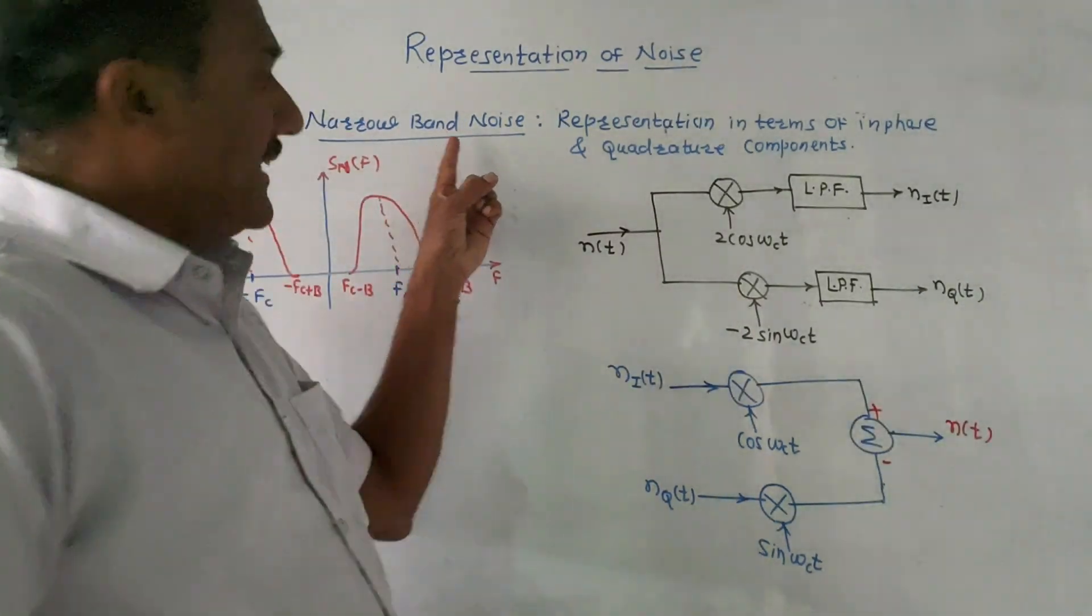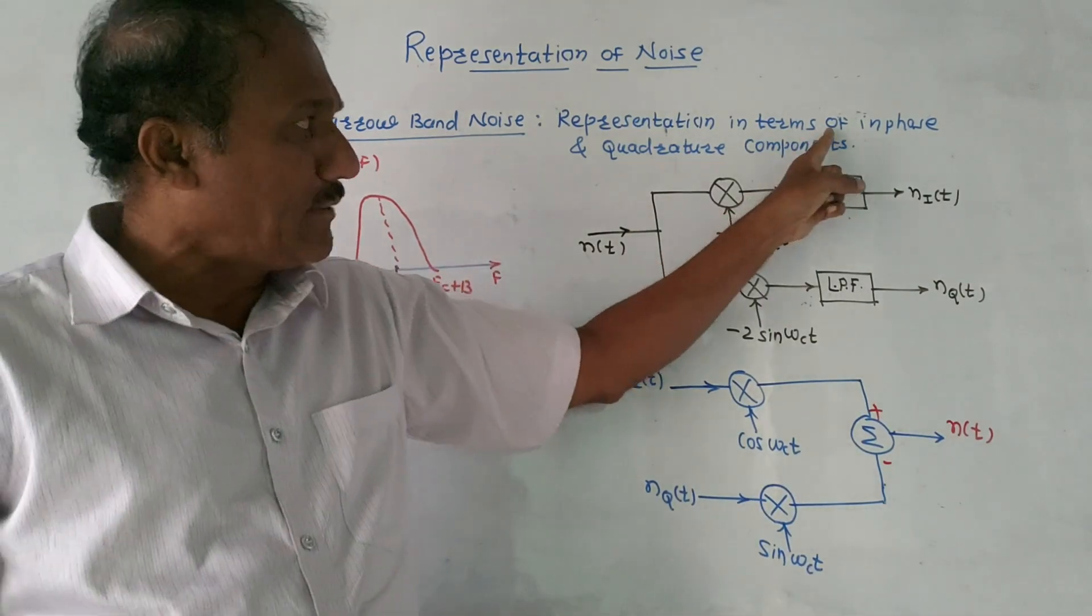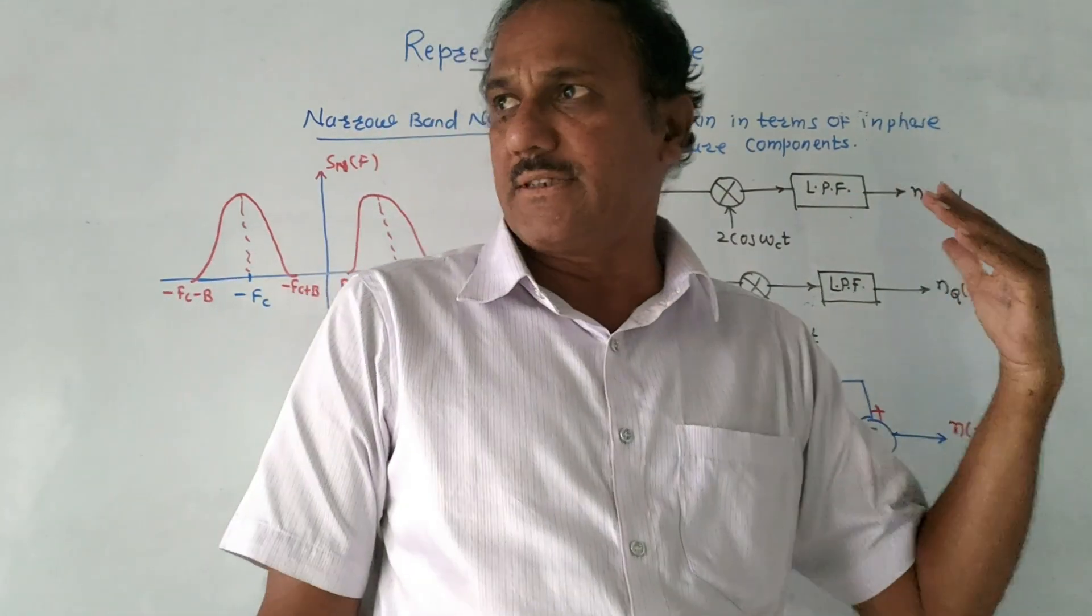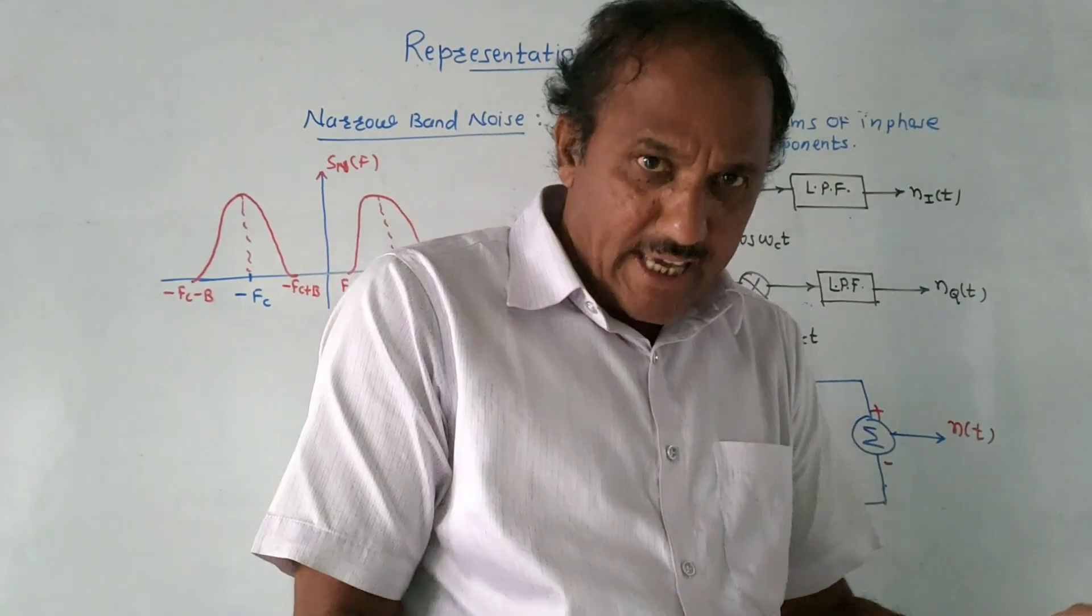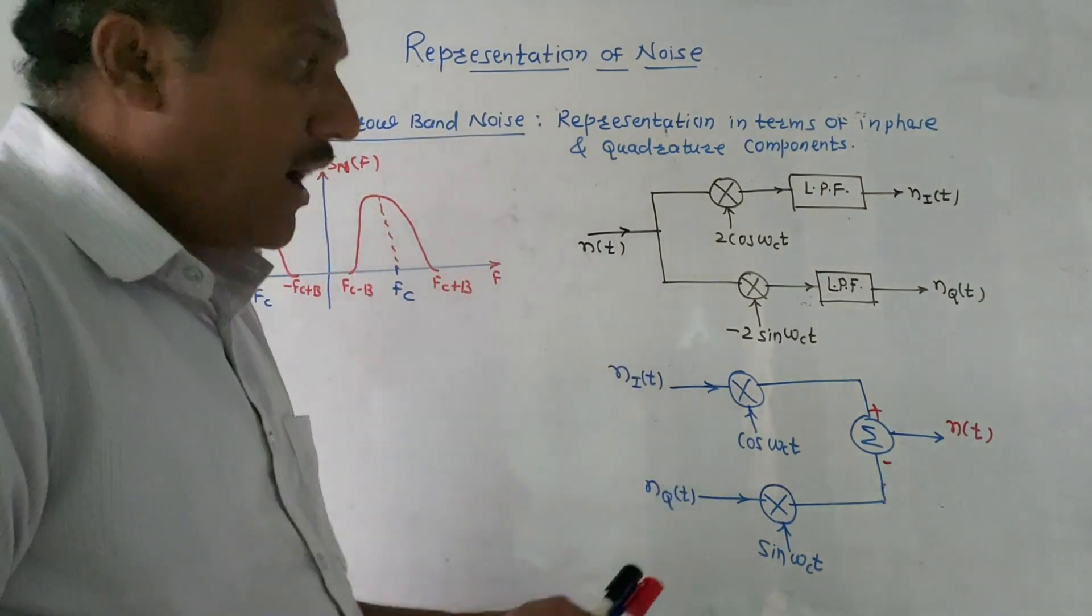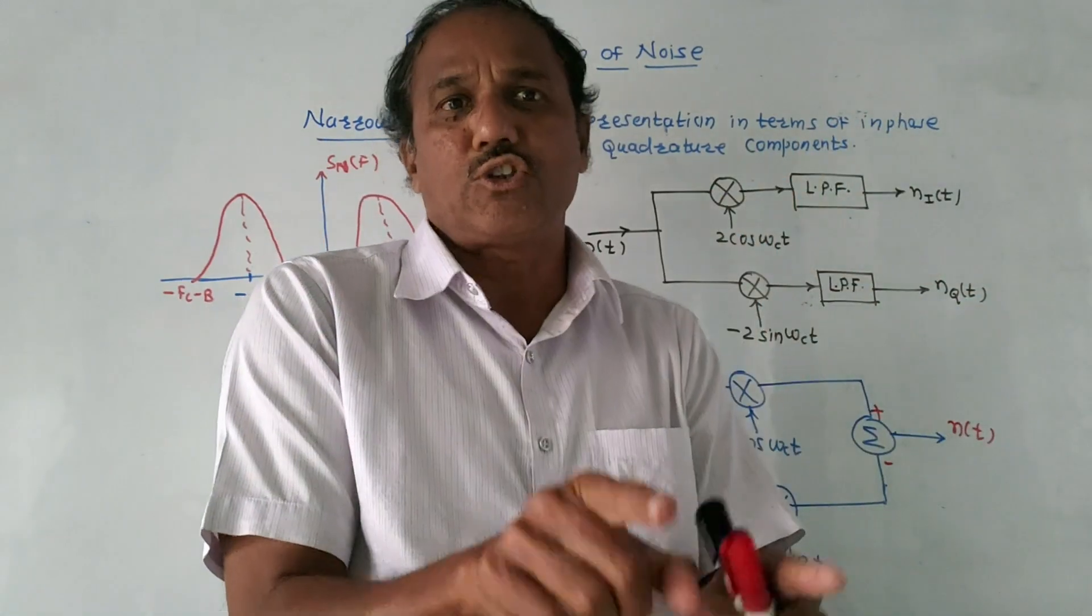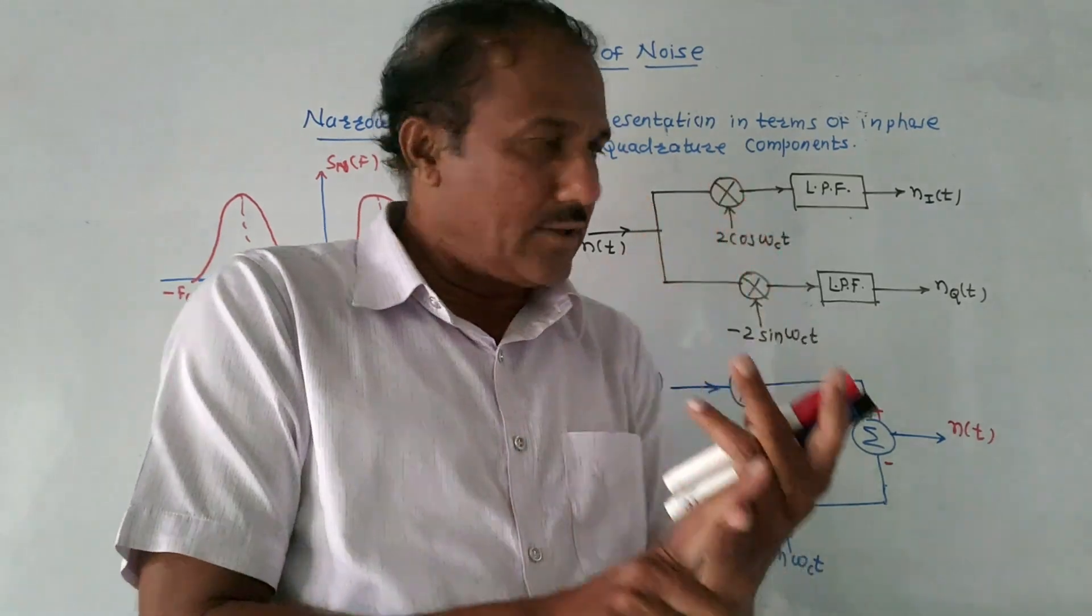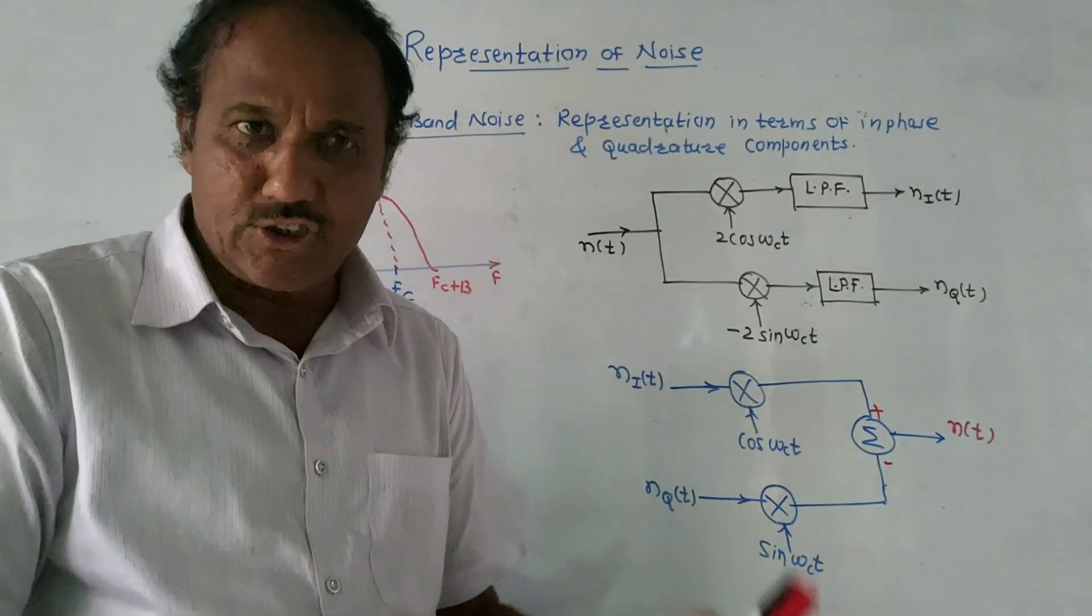The next part is narrow band noise - representation of narrow band noise in terms of in-phase and quadrature component. This is the most important part as far as the representation of noise is concerned. From exam point of view, a straightforward question can be expected: explain the concept of narrow band noise, or how to extract in-phase and quadrature phase components of the narrow band noise, or how to express this noise - narrow band noise in terms of in-phase and quadrature components.